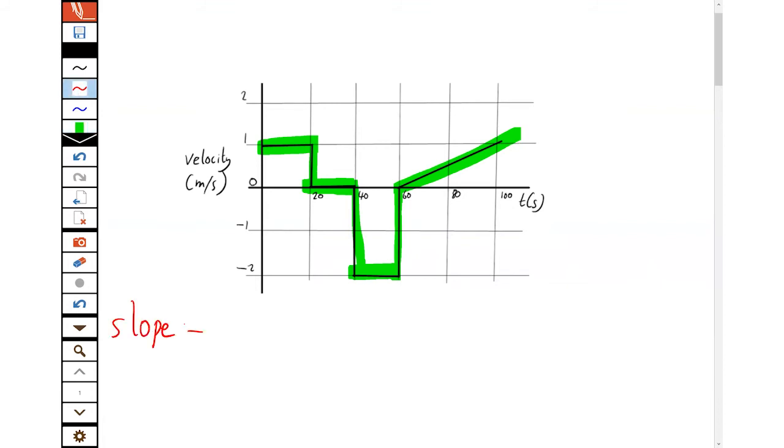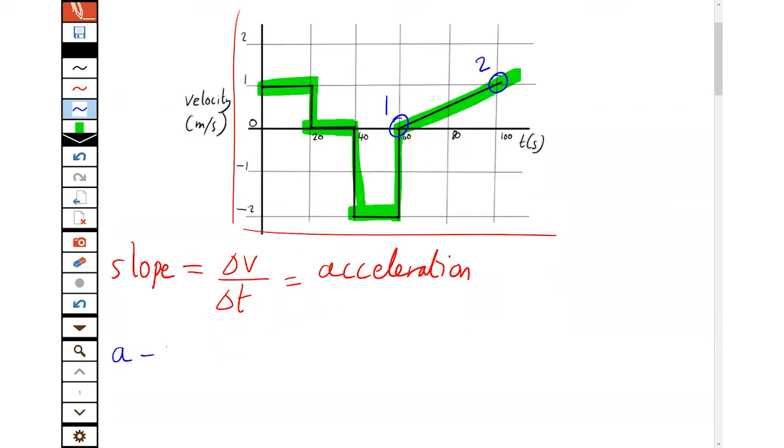And we can do the same trick. Remember the slope is the change in the y-axis, which is the velocity, over the change in the x-axis, which is time. So this is the acceleration. And we can find the acceleration at any point on this. For example, if we want to see this region that's accelerating here, we call that point 2 and point 1. The acceleration is the change in velocity over the change in time. New velocity minus the old. New time minus the old. So that's one meter per second minus zero over the new time, 100, the old time, 60. We see that's one over 40 meters per second squared. So not a very big acceleration at all there.